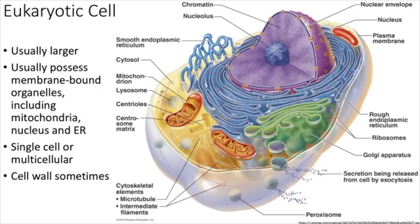We're going to start talking about eukaryotic cells. They're big — we as humans are eukaryotes. We have membrane-bound organelles. A membrane is a phospholipid bilayer, and if you use phospholipid bilayers all over your cell, those are membrane-bound organelles — a trait of eukaryotes. That includes your mitochondria, your nucleus, all that good stuff.